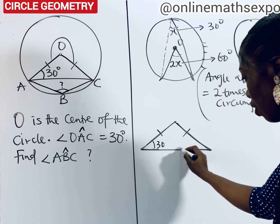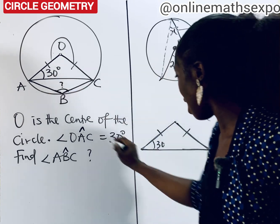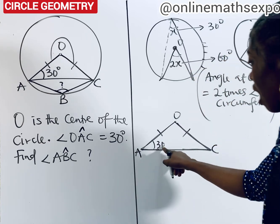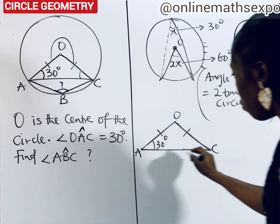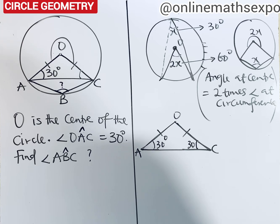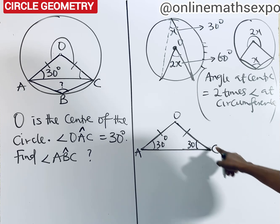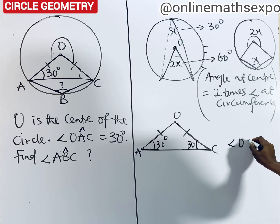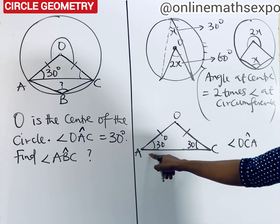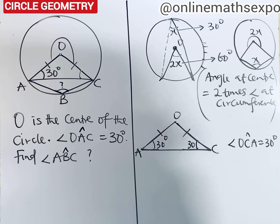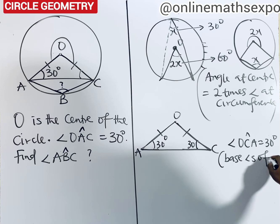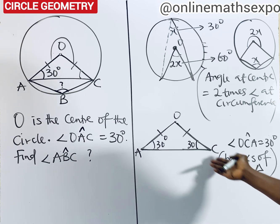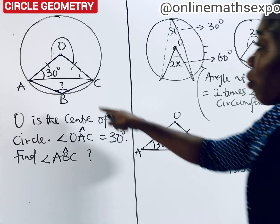When you have an isosceles triangle, the base angles are always equal. Since OA and OC are equal (both radii), the angles they make at the base are always equal. So if angle OAC is 30 degrees, automatically angle OCA is also 30 degrees. Our reason: base angles of an isosceles triangle.